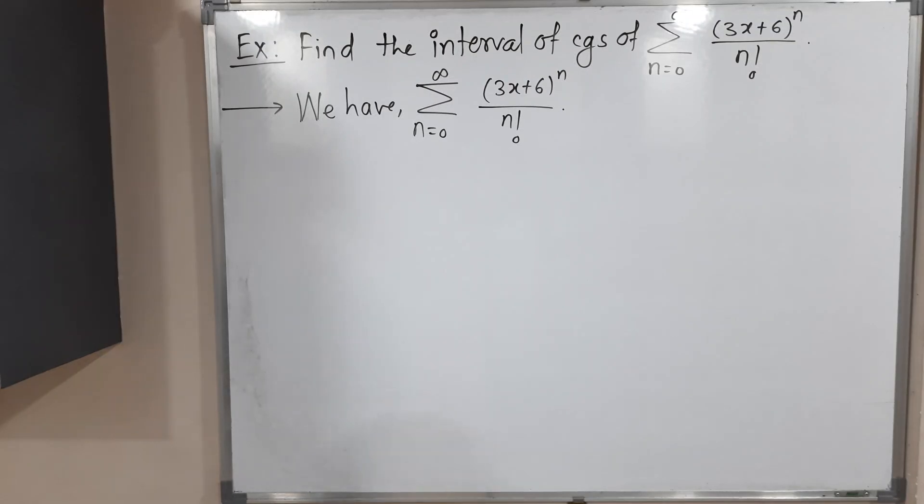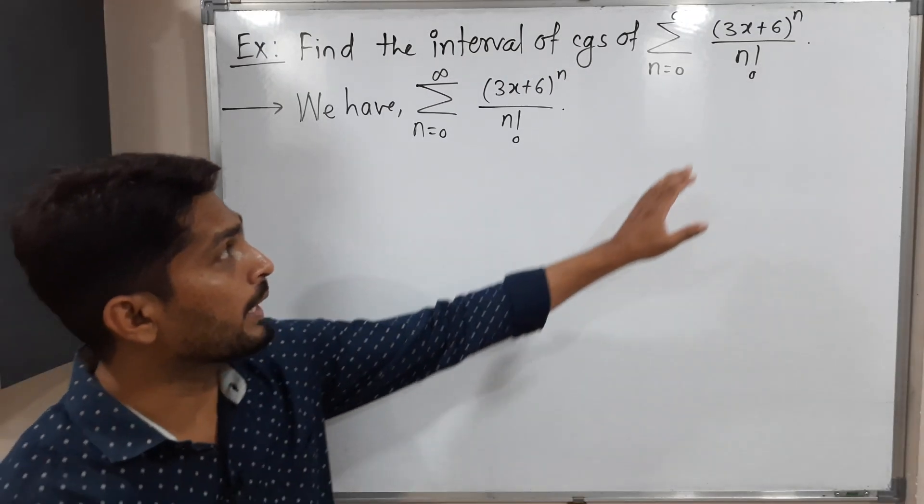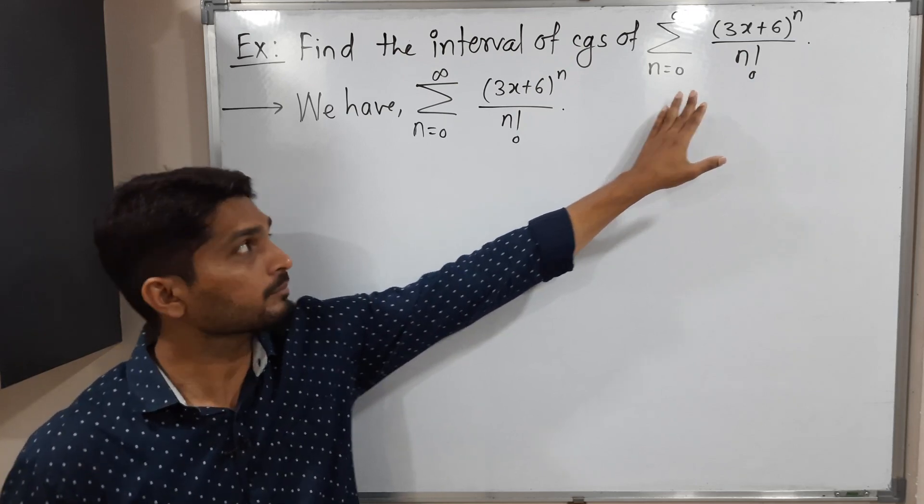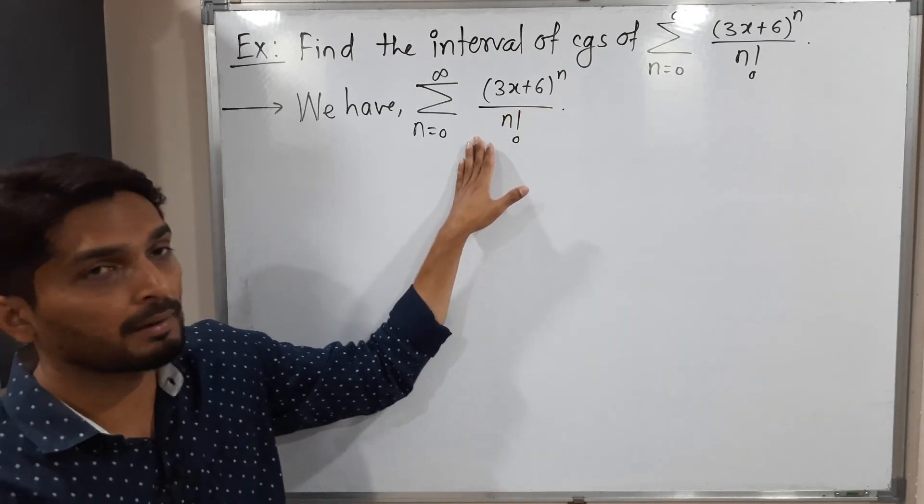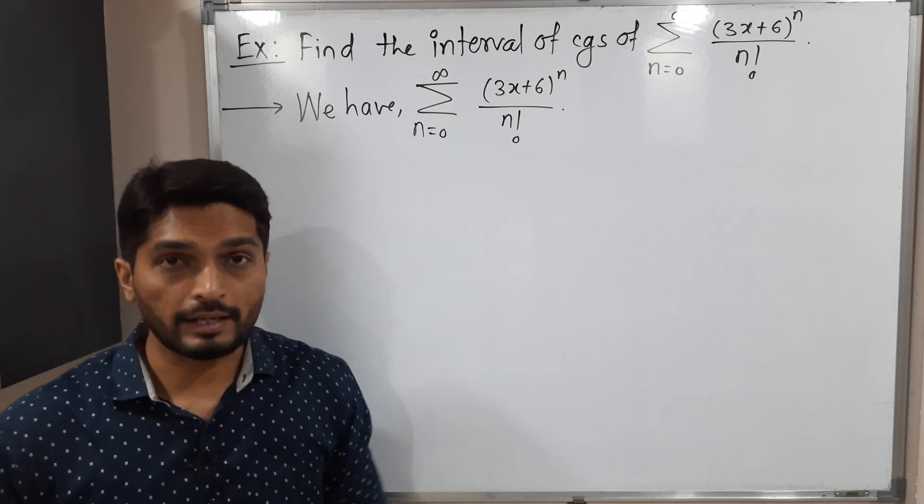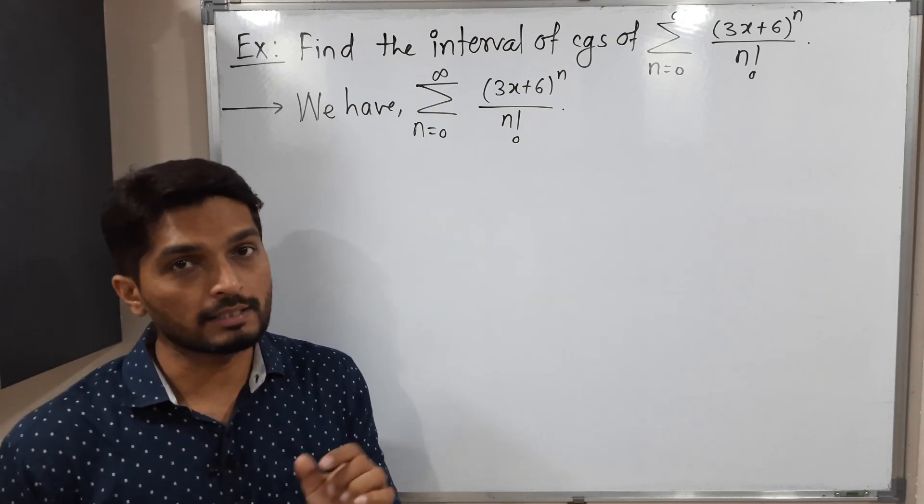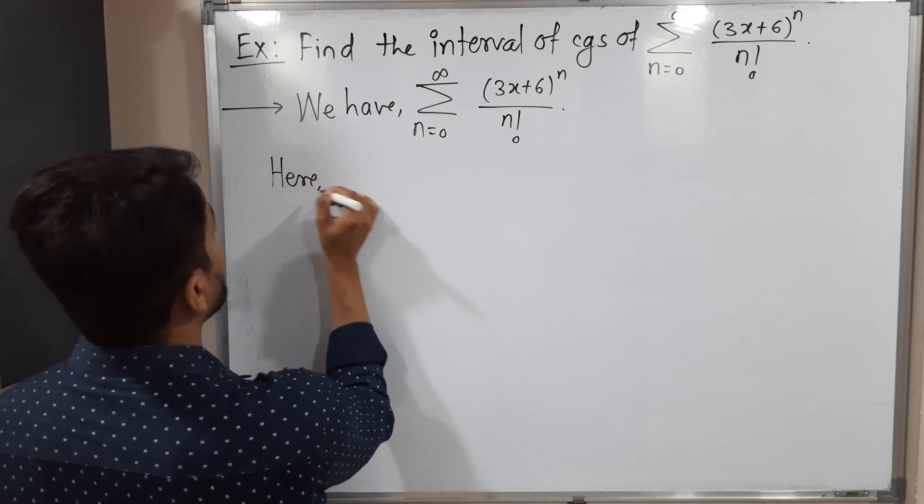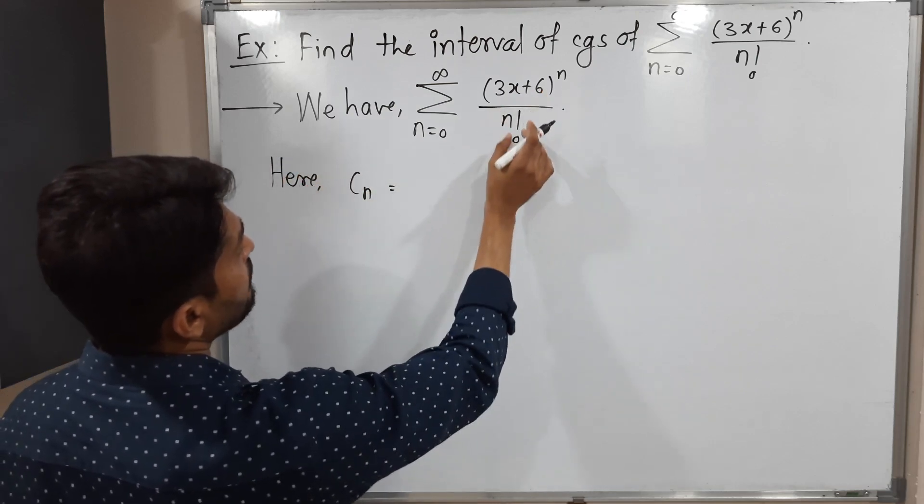Hi everyone, in this video we are going to discuss this example. We have this power series and we have to find its interval of convergence. I have already written the given power series here, so let us write cn. The coefficient cn is equal to the multiple of this bracket, which is 1 upon n factorial. So this is our cn.